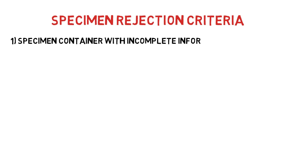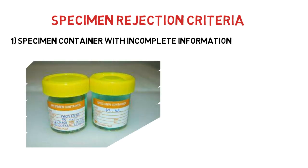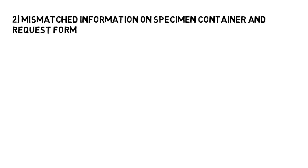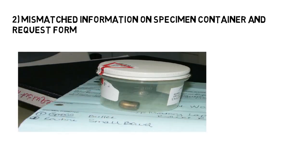Specimen rejection criteria. Number one, a specimen container with incomplete information must be rejected or subjected to inquiry. Number two, mismatching information on the specimen container and request form must be rejected.